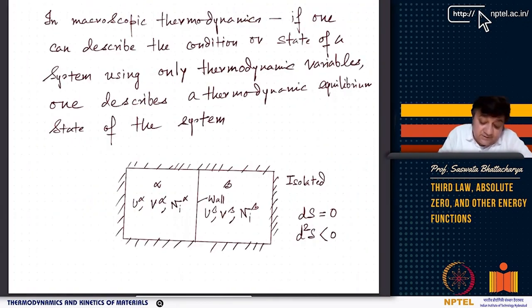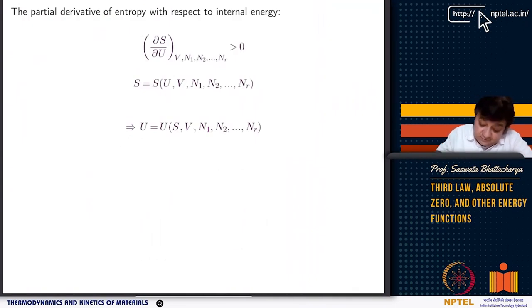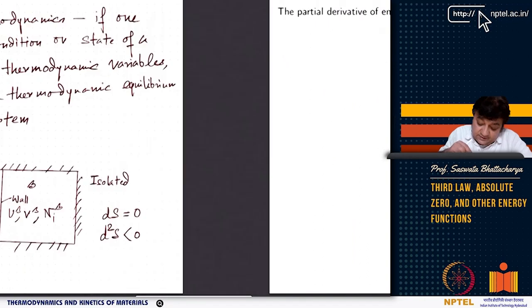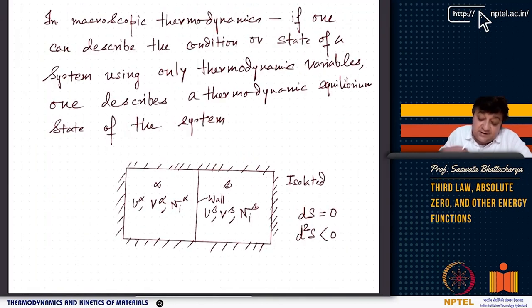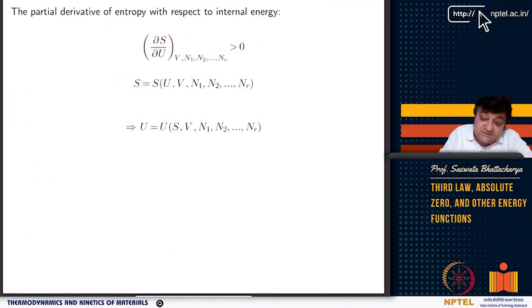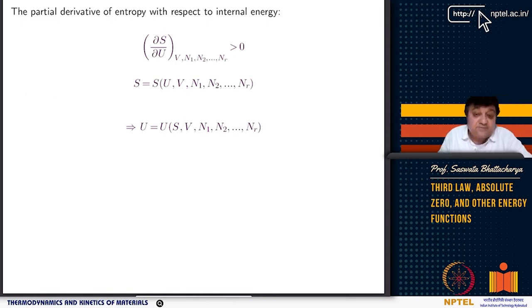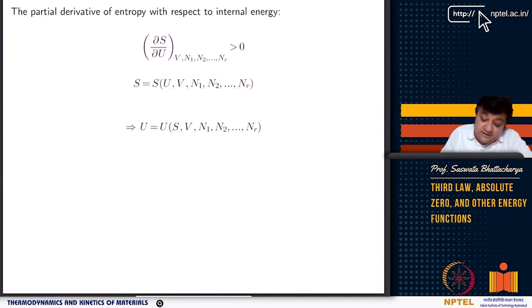Another thing we stated is that entropy has to be continuous and differentiable, and a monotonically increasing function of energy. So del S / del U has to be greater than zero. S is a continuous and differentiable function of energy, and it is monotonically increasing with respect to internal energy.